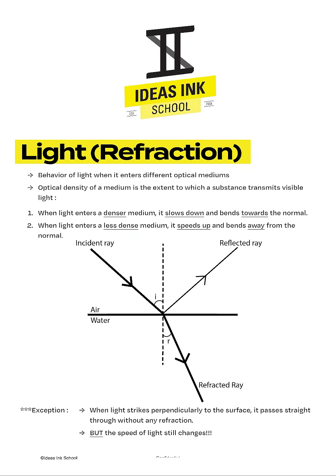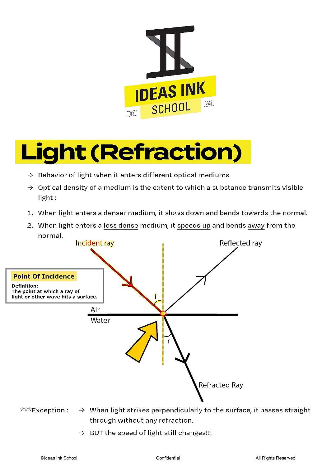Please refer to the diagram for a better understanding. Just like refraction, the incident ray originates from a light source. When the incident ray hits the boundary between air and water, the location is known as the point of incidence. From this point, an imaginary normal which is 90 degrees to the surface is drawn.